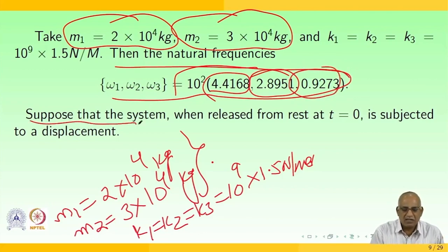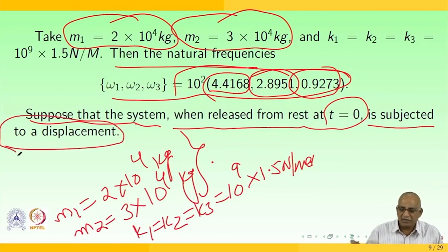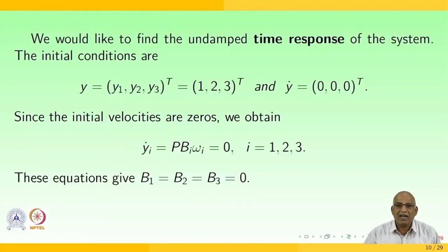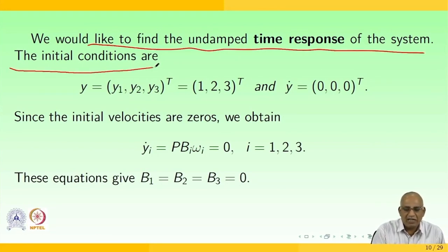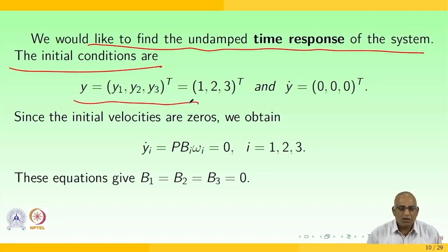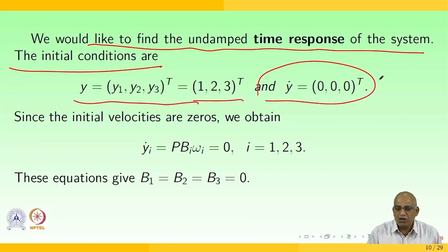Suppose that the system, when released from rest at t = 0, is subjected to a displacement. We would like to find the undamped time response of the system. The initial conditions are y(0) = [1, 2, 3]^T and y'(0) = [0, 0, 0]^T.